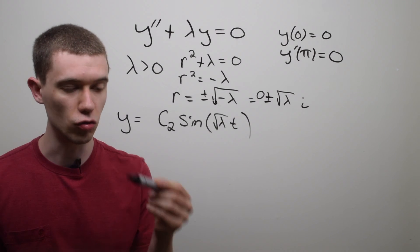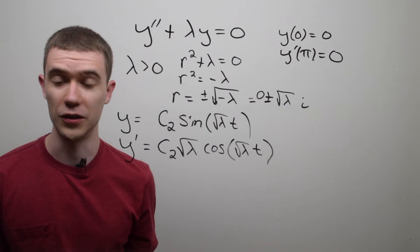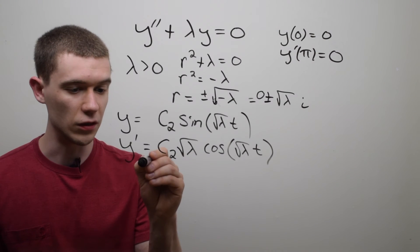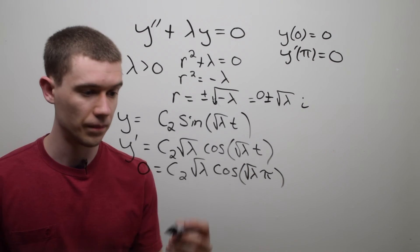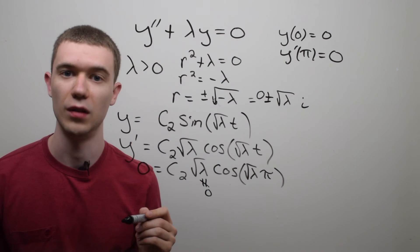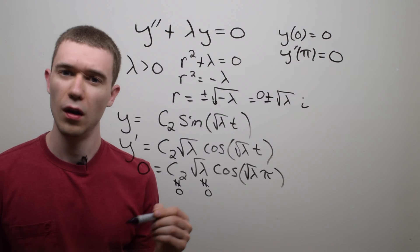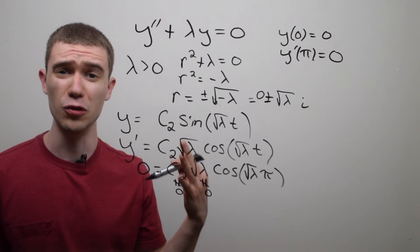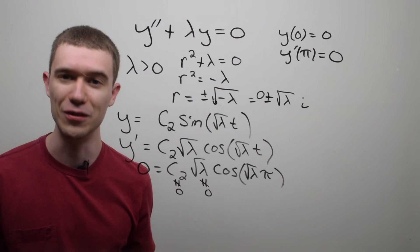So the solution reduces to y = c₂ sin(√λ · t). To use the second initial condition I take the derivative, which is just the derivative of sine. Plugging in π gives 0 = c₂√λ cos(√λ · π). Now √λ ≠ 0 since λ is positive. I'm also going to assume c₂ ≠ 0 — because if c₂ = 0 I'd have y = 0, the trivial solution again, no matter what λ is. So I want something non-trivial.